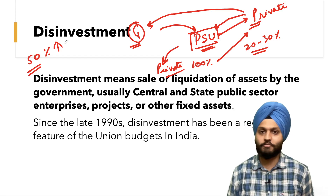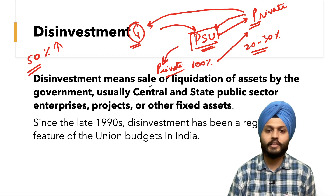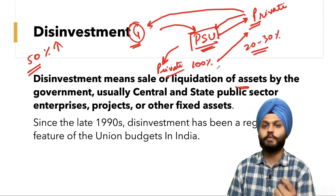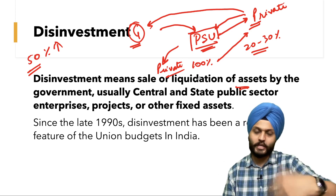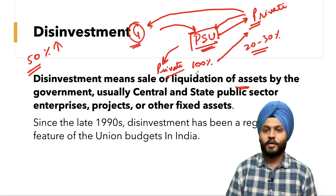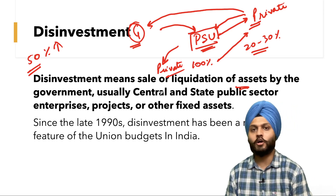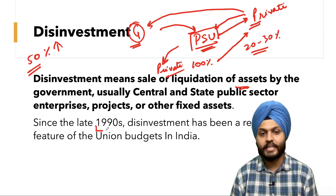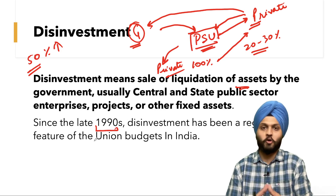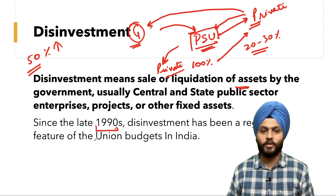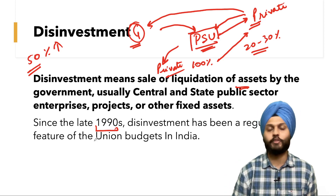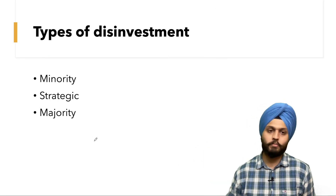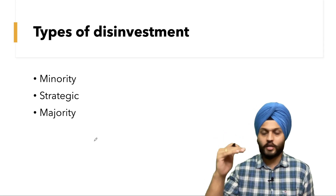So disinvestment means the sale or liquidation of assets — something that the government owns — to the private sector, usually of central or state public sector companies. Since the late 1990s, disinvestment has been a core component of India's fiscal policy. In the budget, time and again, disinvestment targets are fixed by the government.